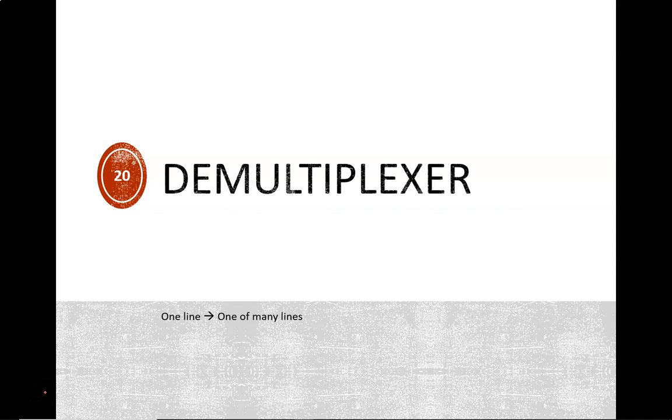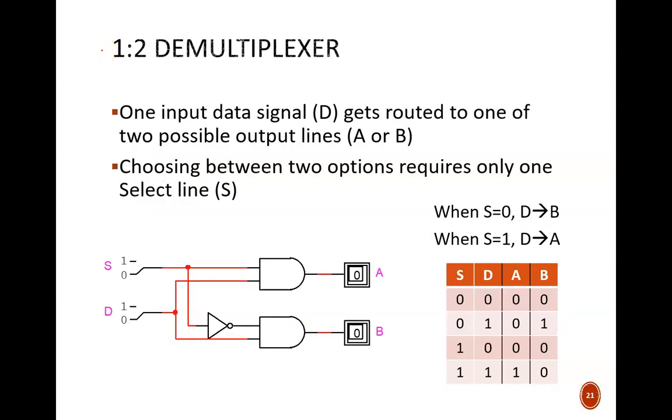In this video, we'll add two little letters to the front of that name. Not surprisingly, demultiplexers perform the opposite function of multiplexers. They route one data input to one of many possible outputs. The abbreviated name for this device is DMUX. Let's start with the simplest possible option, a 1 to 2 DMUX.